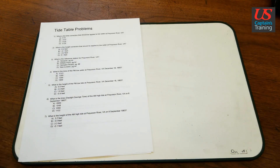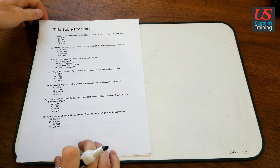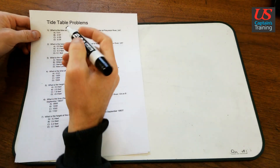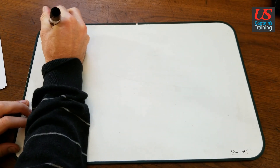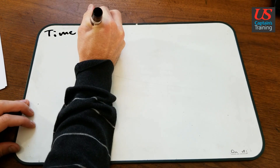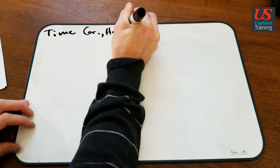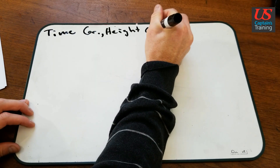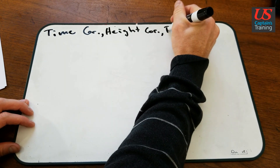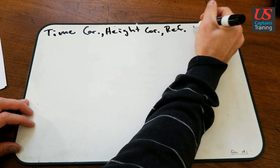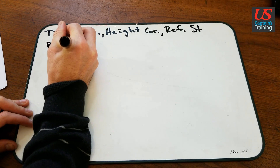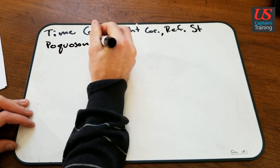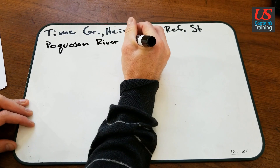So we are going to record our questions — what are we trying to answer? We want time correction, height correction, and the reference station. We are looking for those values for Pocosin River, VA.